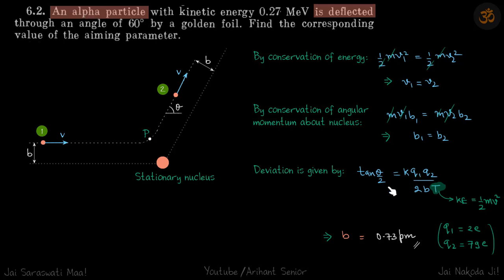This problem is formula-based, which is not in JEE syllabus, but there are important things we'll learn from it. In this problem, an alpha particle with a given energy is deflected by a gold foil, and we need to find the value of the aiming parameter.